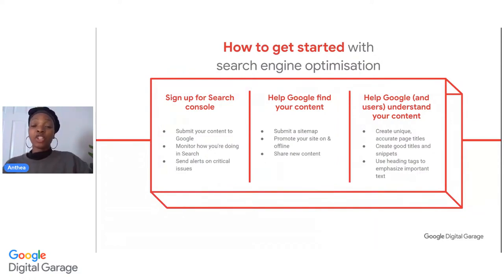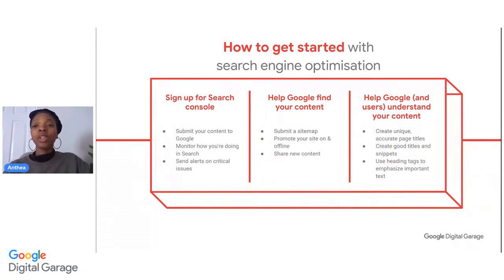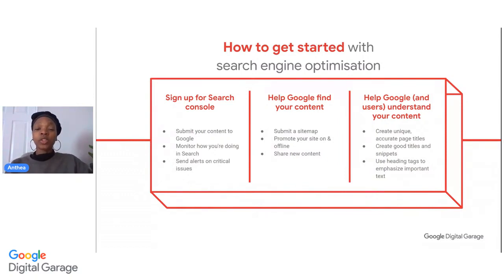Next, ensure that you are helping Google to find your content. Consider submitting a sitemap, as this will help the Google bots understand the structure of your site, so when it comes to being indexed, Google better knows how your site links together. Then help Google and your customers to understand your content — look into creating valuable content that will allow your users to get what they really want. Google really values useful and fresh content that helps its users find exactly what they're looking for. Consider using unique and accurate page titles, because good titles are what captures people's attention. Use heading tags also to emphasize important text.